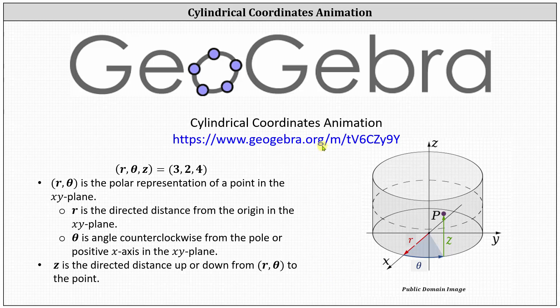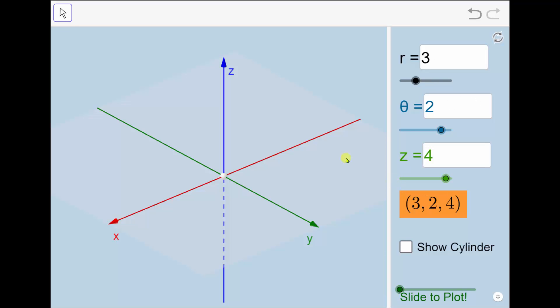The URL for the animation is shown here in blue. Let's plot the point three comma two comma four using cylindrical coordinates. This indicates r equals three, theta equals two, and z equals four. r is the directed distance from the origin in the xy-plane, so we'll start at the origin and move out along the positive x-axis three units.